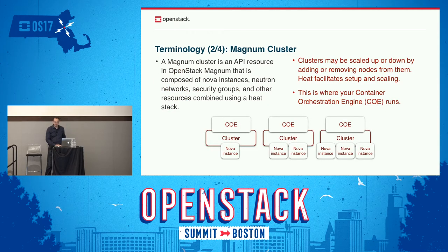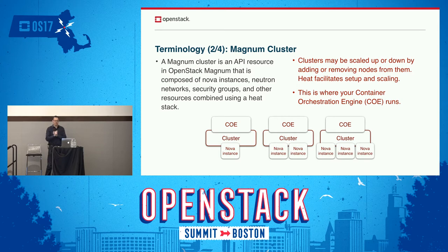The next term is Magnum cluster — a grouping of OpenStack cloud resources on which the COE runs. It's a bunch of Nova instances, a Neutron network, security groups, load balancer resources, software configuration resources, et cetera. All of these are organized in a Heat stack that the Magnum cluster creates upon creation.